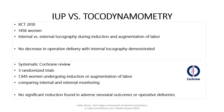In one large randomized control trial, 1,456 women who underwent induction or augmentation of labor with IV oxytocin were randomized to receive either IUPC or external tocodynamometry. The authors failed to demonstrate a decrease in operative delivery with internal tocography.